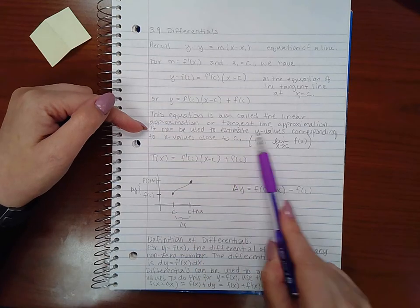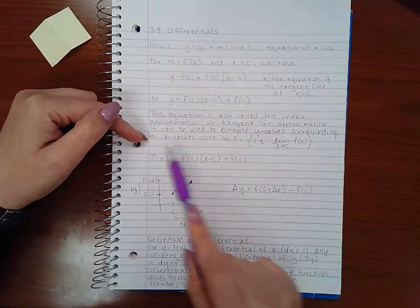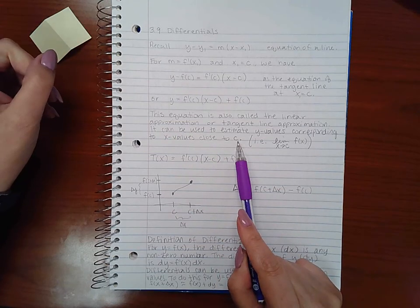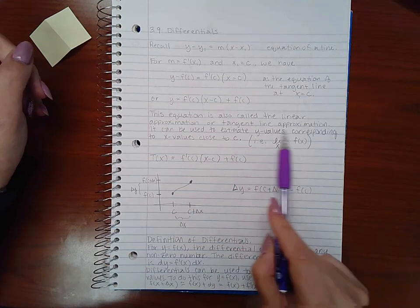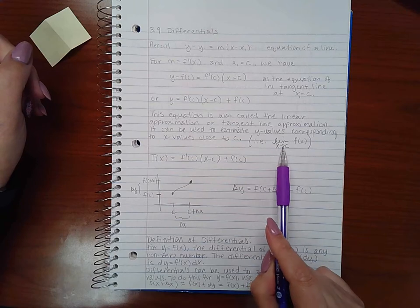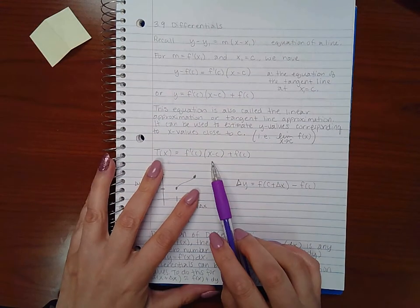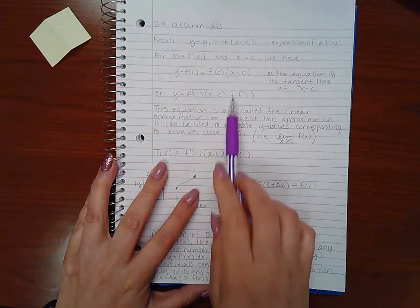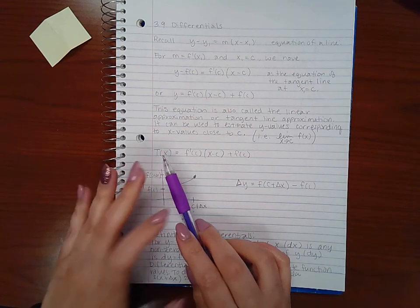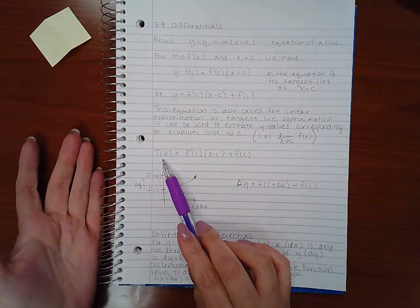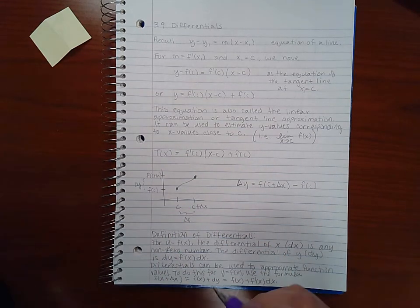And it can be used to estimate y values corresponding to x values close to that c. In other words, it can be used to find the limit as x approaches c of the function. So this is another way of writing, instead of saying y equals, they just say t of x, kind of like f of x but it's t of x because it's representing the tangent line.